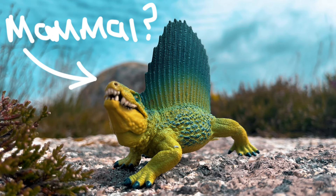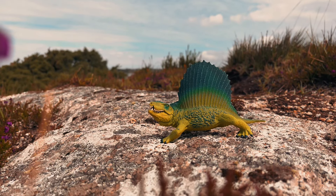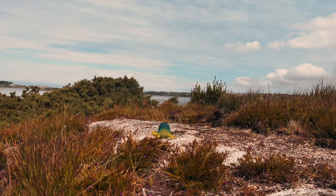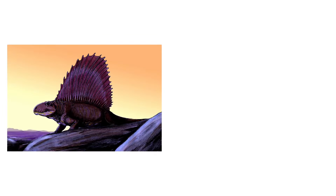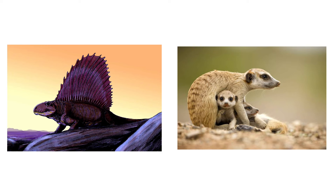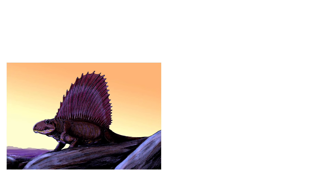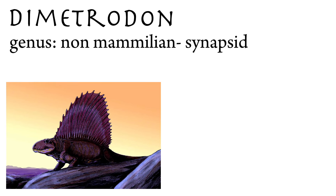So why is this thing not considered a dinosaur? Or even a lizard? Well, the answer is quite shocking. Believe it or not, Dimetrodon is one of the earliest relatives of mammals. To be scientific, Dimetrodon is an extinct genus of non-mammalian synapsid.